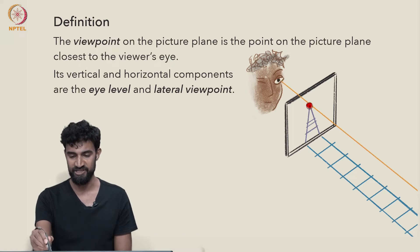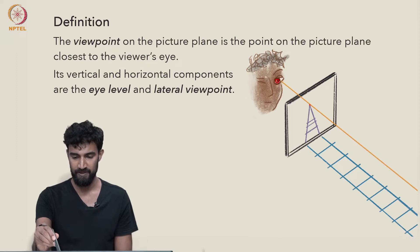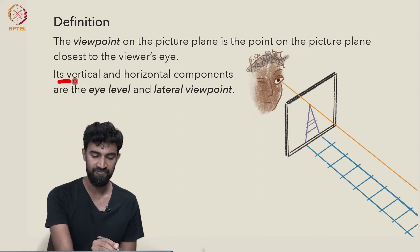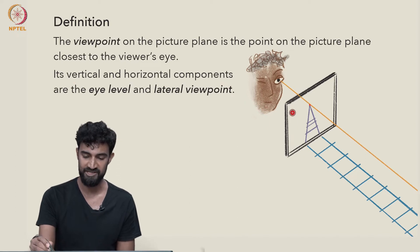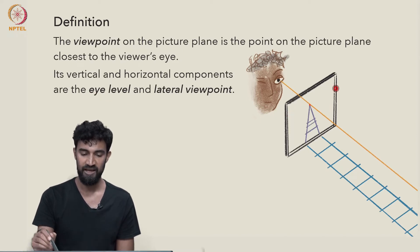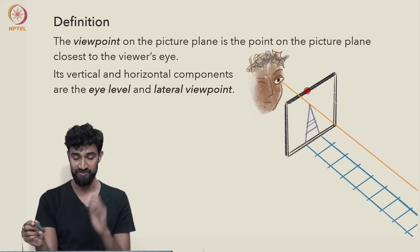In this case, it'll be this point here. The viewer's eye is closest to the picture plane here, and this line is going to be perpendicular to the picture plane. Notice that the vertical and horizontal components of the viewpoint are significant. The vertical component is the eye level of the viewer, and the horizontal component is the lateral position, the lateral viewpoint of the viewer.